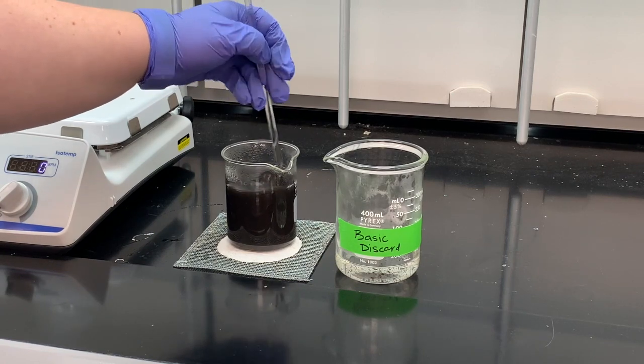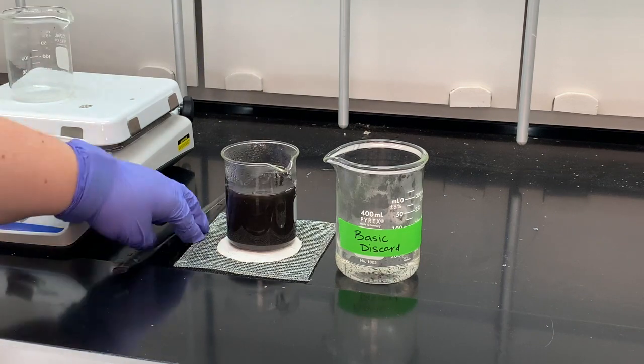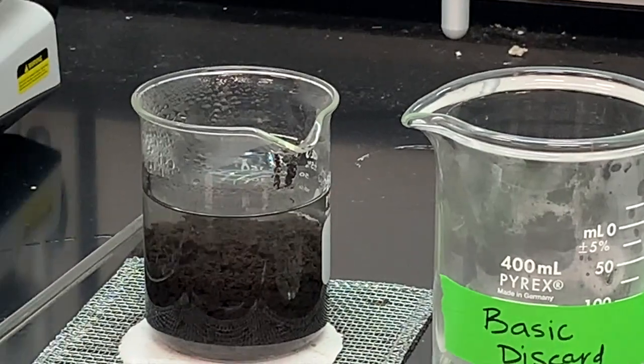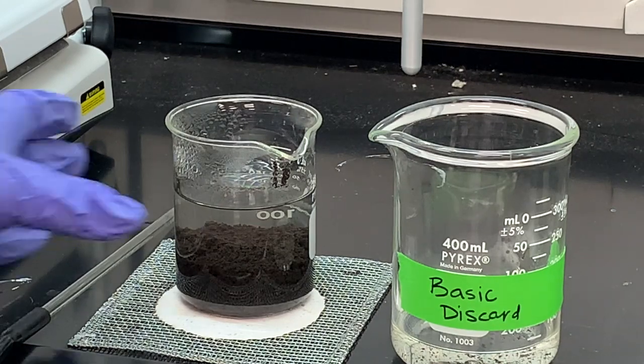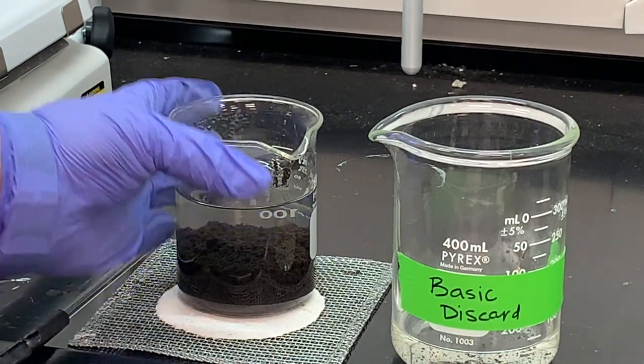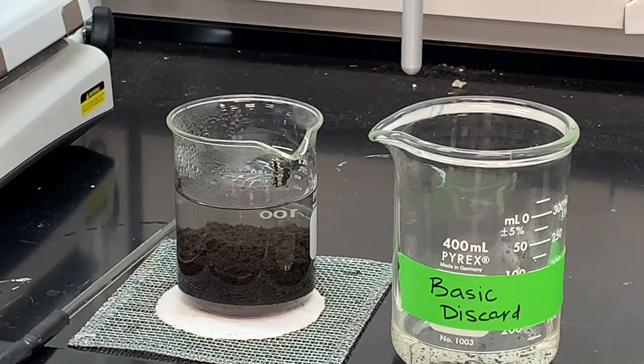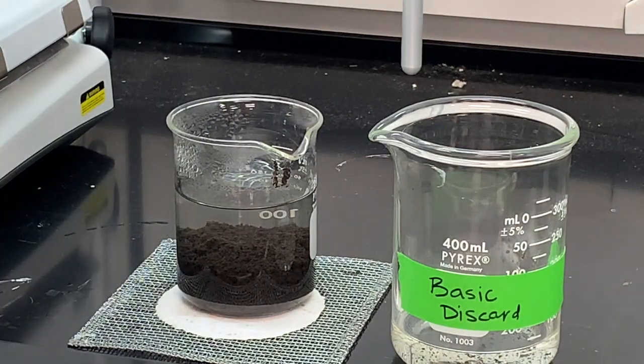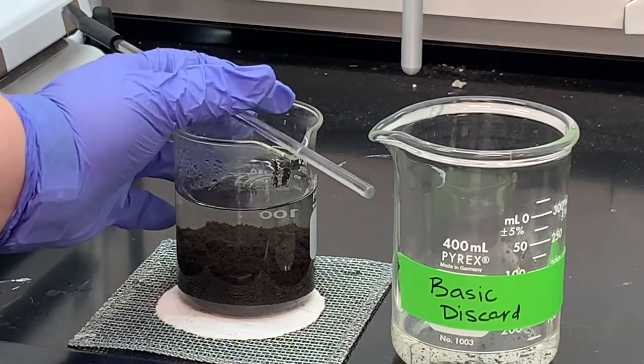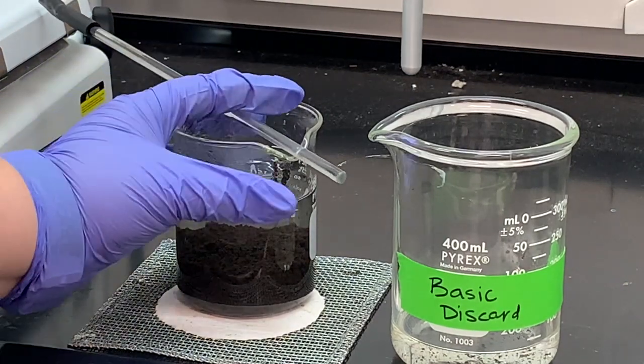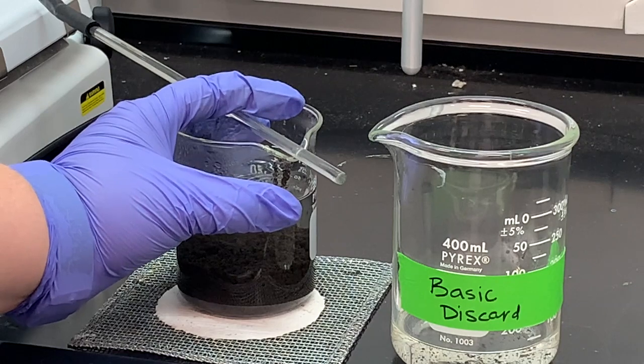And then I'll let this cool off again and settle and decant it again. So our solution has separated again. I'm going to go ahead and decant this one more time into the basic discard before we move on to the rest of the reactions. Remember that we're not going to be able to decant this to dryness.